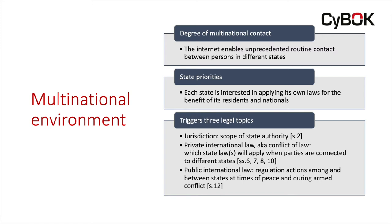Second is the subject of private international law, what lawyers also call conflict of law, and that answers the question: what state law or laws will apply when parties connected to different states are arguing with each other? I have discussed private international law specifically within the context of individual rules — so section six talks a bit about private international law for contracts, seven for torts, eight for intellectual property, and ten in the context of dematerialized documentation and trust services. Third, it triggers a question of public international law, the area that regulates actions among and between different states.